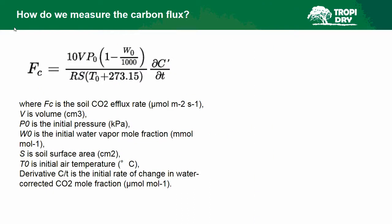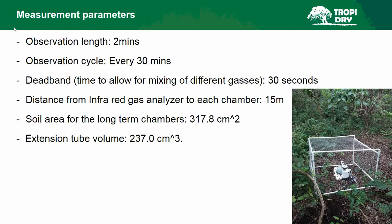This is the formula that the LI8100 implements. FC is the soil CO2 efflux rate in micromoles per meter squared per second. V is the volume in centimeters cubed. P0 is the initial pressure in kilopascals. W is the initial water vapor mole fraction in millimoles per mole. S is the soil surface area. T0 is the initial air temperature. The derivative of delta C-prime over delta T is the initial rate of change in water-corrected CO2 mole fraction in micromoles per mole. Some measurement parameters are important for our observations, and the calculation is based on these — they change for every survey, so this applies only to us.